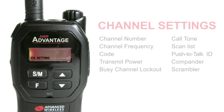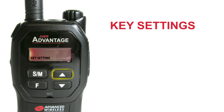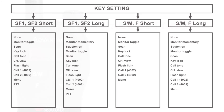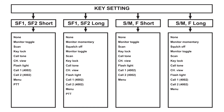The third menu is the key settings. Under the key settings menu, you'll be able to set the function for both short and long presses of the side function 1, side function 2, SM, and F keys.